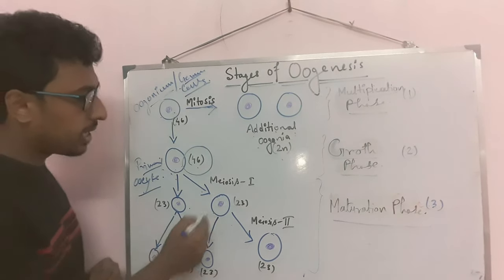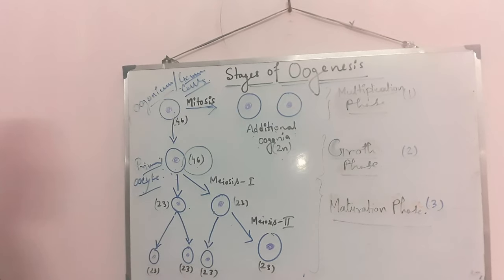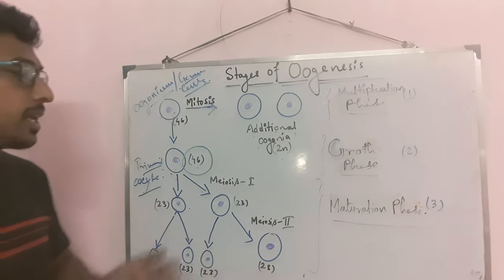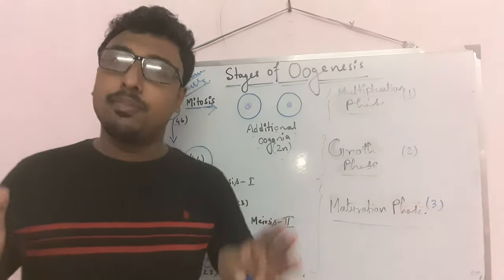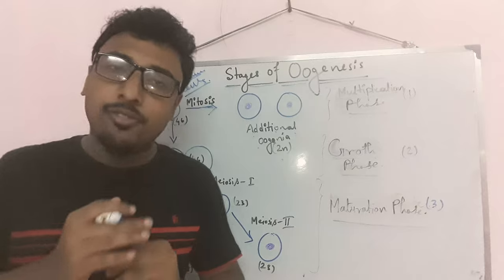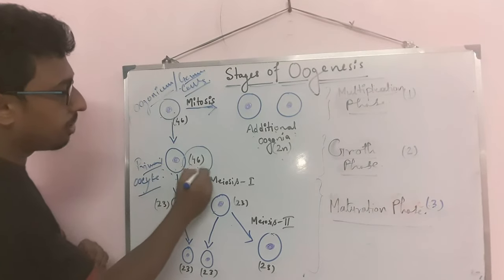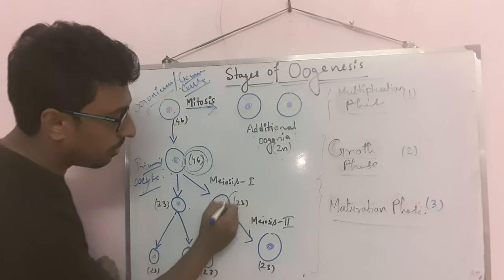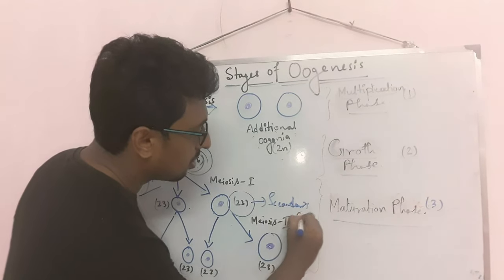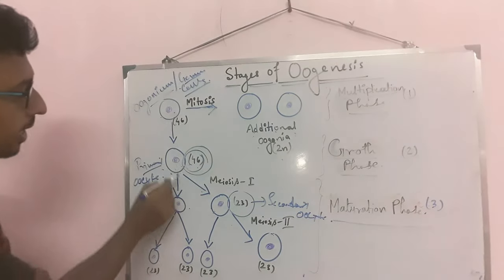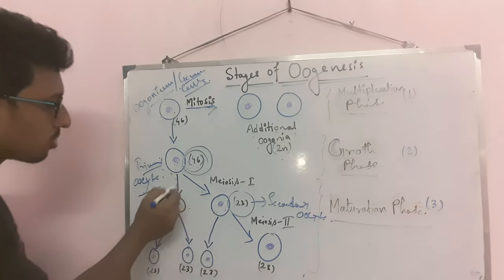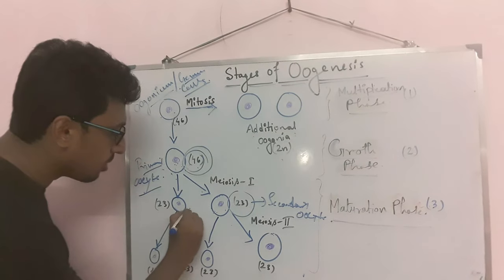From primary oocyte, secondary oocyte will form by meiosis 1. As a result, in the secondary oocyte the chromosome number will reduce — it will be half. The primary oocyte chromosome number was 46, but in the secondary oocyte the chromosome number is 23. When secondary oocyte is forming from primary oocyte, along with it one polar body will also form.